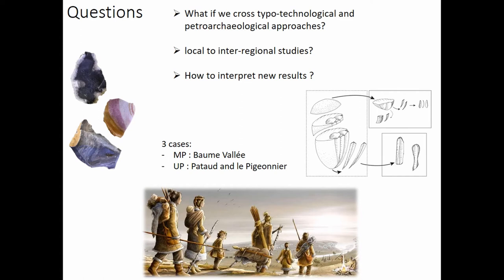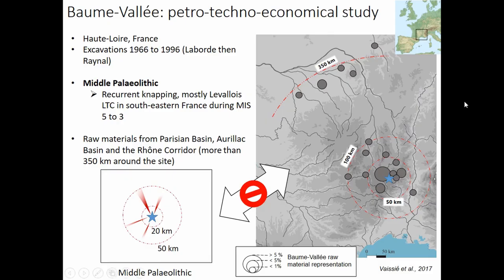Bomb Valley is located here in the Massif Central. It is a Middle Paleolithic site with recurrent Levalloisian knapping, and this techno-complex is the most well-known in the southeastern part of France. When we look at the raw material provisioning, we have some local to semi-local raw materials, but also incredible results with some raw materials coming from up to 350 kilometers — which is huge for the Middle Paleolithic and does not fit at all with the presupposition of very local provisioning.